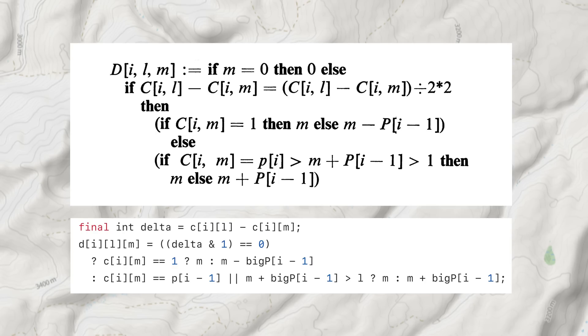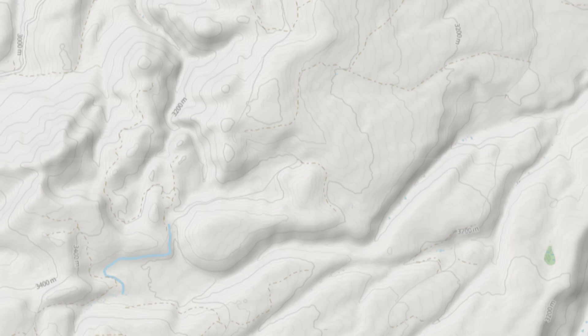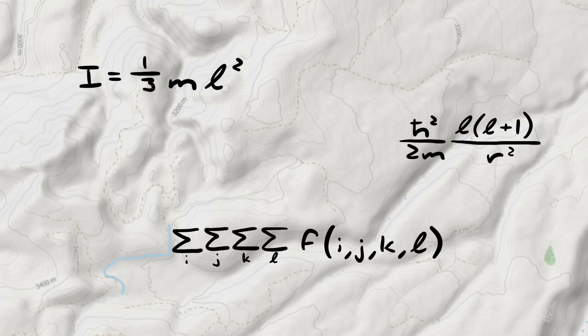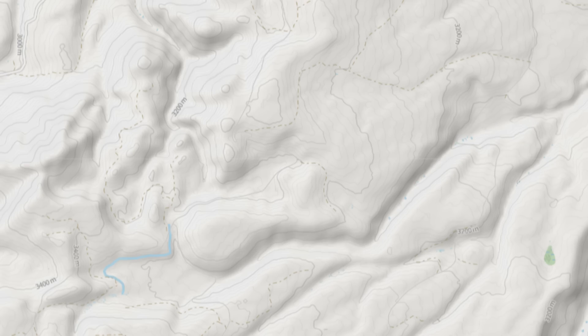Whether the code is right or not, I think there's a lesson to be learned here: don't name variables so others can't read them. I get it — maybe you want your code to match your equations, or you want to represent length or angular momentum quantum number, or you've already used i, j, and k and need another index. But is it really for the best? Maybe I'm the idiot and the code makes perfect sense to everyone else.